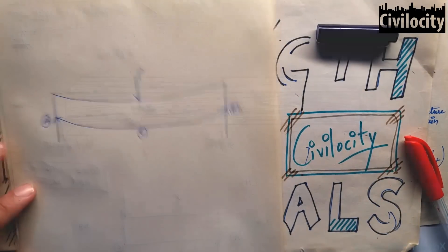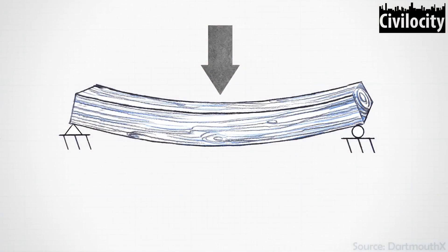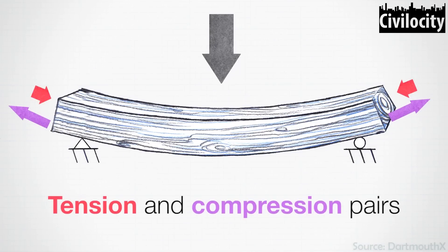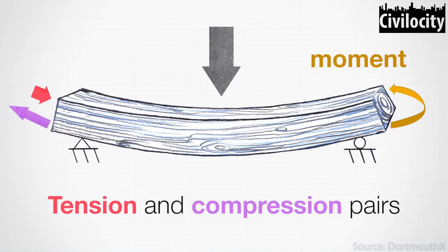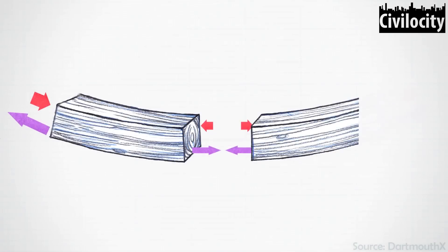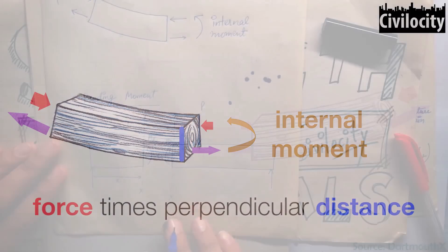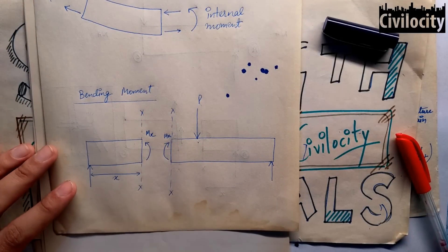Similarly bending moment ke case mein bhi aisa hi hota hai. Agar koi load ek beam ko bend karne ki koshish kar raha hai, to us beam ke andar bhi internally bending moment induce hoga, jo ki usko bending se rokega. Suppose kijiye, ek simply supported beam jis pe centrally ek point load lag raha hai, us beam ki kuch depth aur us point load ki wajah se us beam ke andar bending produce ho rahi hai aur wo U shape bana rahi hai. Us bending ki wajah se jo uske bottom fibers hain, unke andar tension ki condition induce ho jayegi, aur jo top fibers hain, unke andar compression ki condition induce ho jayegi. To us bending ko counteract karne ke liye, ye tension aur compression hai, ye ek internal couple bana lenge, jisko kehenge internal moment, aur usi moment ko hume find out karna hai different different sections pe, taaki hume pata chal jaye ki humare kaun se sections weaker aur kaun se sections stronger.